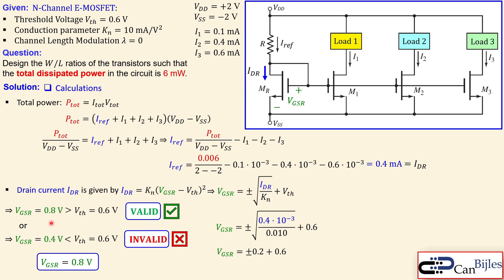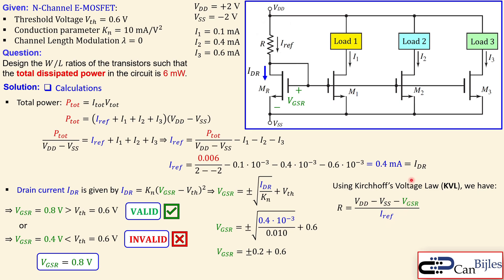Now we apply Kirchhoff's Voltage Law to calculate the resistor R. VDD supplies voltage through R and connects to VSS. So R equals (VDD − VSS − V_GS_R) divided by the reference current I_DR. Substituting the values: R = (2 − (−2) − 0.8) / 0.4 mA = 3.2 V / 0.4 mA = 8 kilohms exactly.